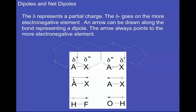An arrow can be drawn parallel to the bond, pointing towards the more electronegative element, and a line is put on the less electronegative end to represent a plus sign. This shows the direction of electron pull. These arrows can only be drawn along bonds — they cannot be drawn on non-bonding electron pairs — because electrons themselves are not polar.